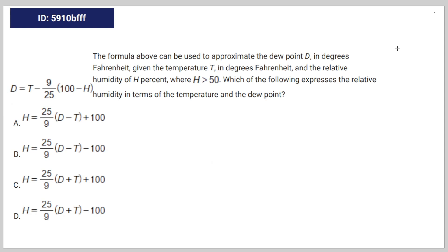So we're given the following math question. The formula above can be used to approximate the dew point D in degrees Fahrenheit given the temperature T in degrees Fahrenheit, and the relative humidity of H percent where H is greater than 50. Which of the following expresses the relative humidity in terms of temperature and dew point?